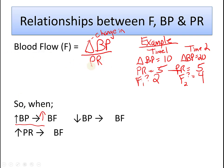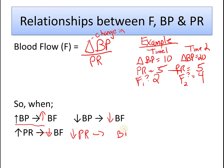Both blood pressure and flow are in the numerator, so they directly affect each other. Peripheral resistance, however, is in the denominator — it is inversely proportional to blood flow. When peripheral resistance goes up, blood flow goes down, and vice versa. If peripheral resistance goes down, blood flow goes up. So the flow of blood through your body is dependent on blood pressure and friction.